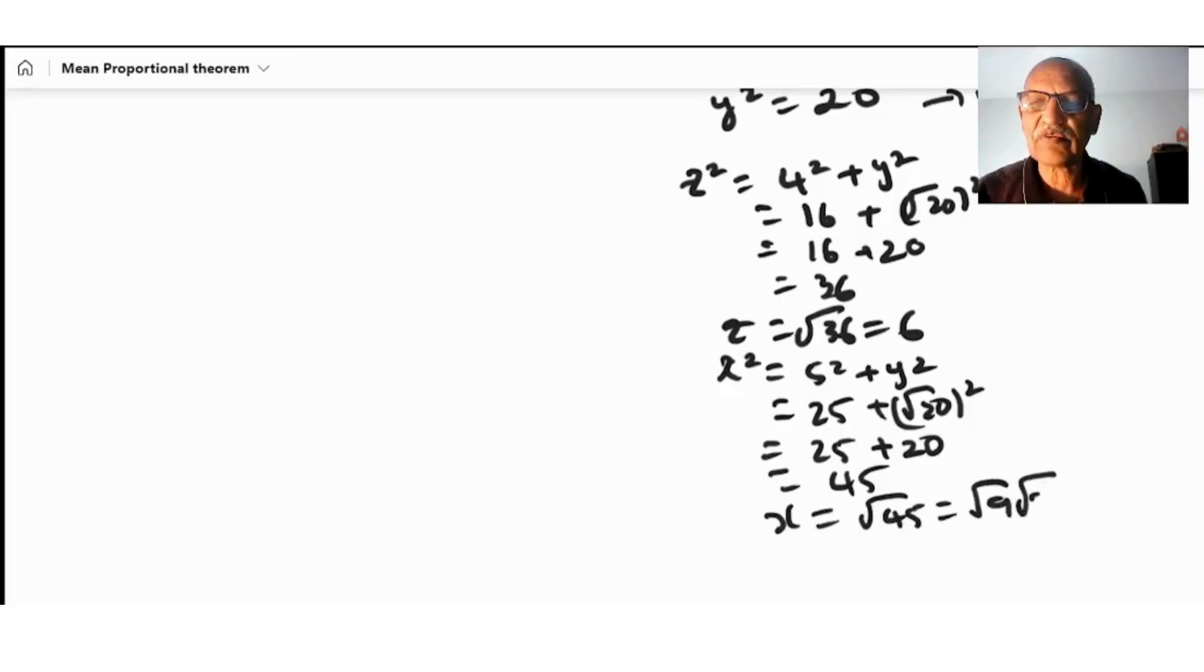So these are all my answers. We found all three unknowns. This is the mean proportional theorem.